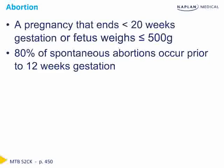About 80% of spontaneous abortions are going to occur before 12 weeks gestation. There's a physiologic connection here: the majority of spontaneous abortions before 12 weeks are due to chromosomal abnormalities that are not compatible with life. Those that occur in the second trimester are more likely due to maternal diseases. This is a really significant distinction as it impacts the treatment of future pregnancies.